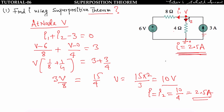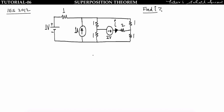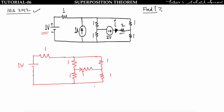Let us solve an IES 2012 problem. We have to find the response in the 2Ω branch. The circuit has a 2V source, a 1A current source, and a 1V voltage source. First, consider the 1V source alone: open circuit the current source and short circuit the 2V source. The resulting circuit is a balanced Wheatstone bridge, so the current through the 2Ω branch is i1 = 0.